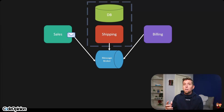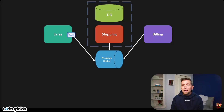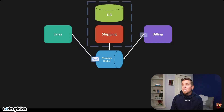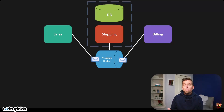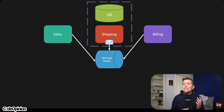I'm going to show this exact example in code so you can see where the code for the workflow actually lives. We have three different boundaries: sales, shipping, and billing. Sales is going to publish an order-placed event when the order is placed, and billing is going to publish an order-billed event when the customer is charged. Shipping cannot ship until both of those events have happened, because in async messaging they may arrive out of order.